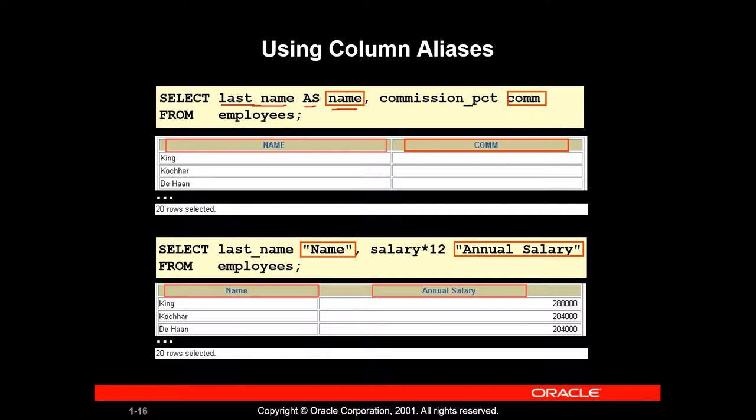If you don't use AS, you can select last name as name from employees. You can also do it without AS — just give a space and keep the name of the alias. Another way is to select that column, give a space, and keep the alias name directly.